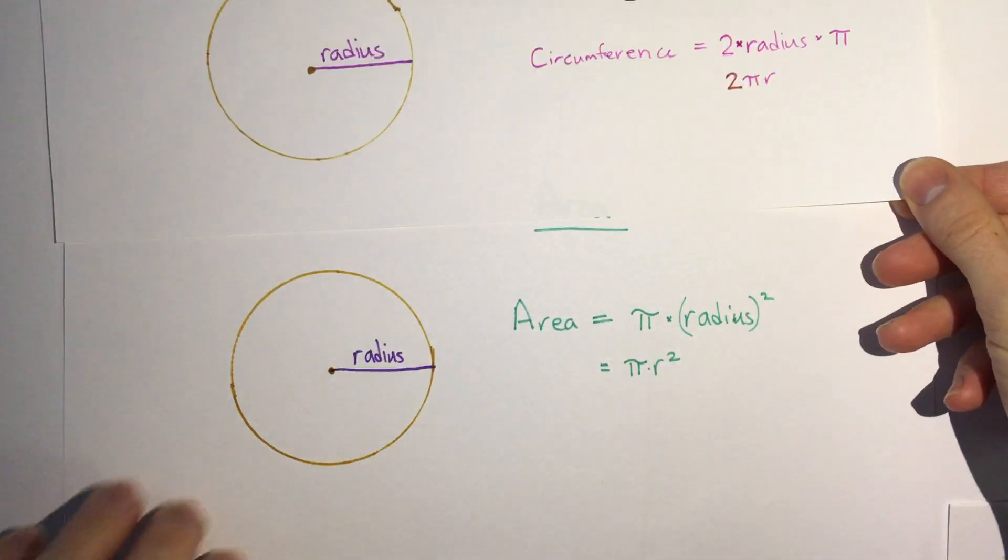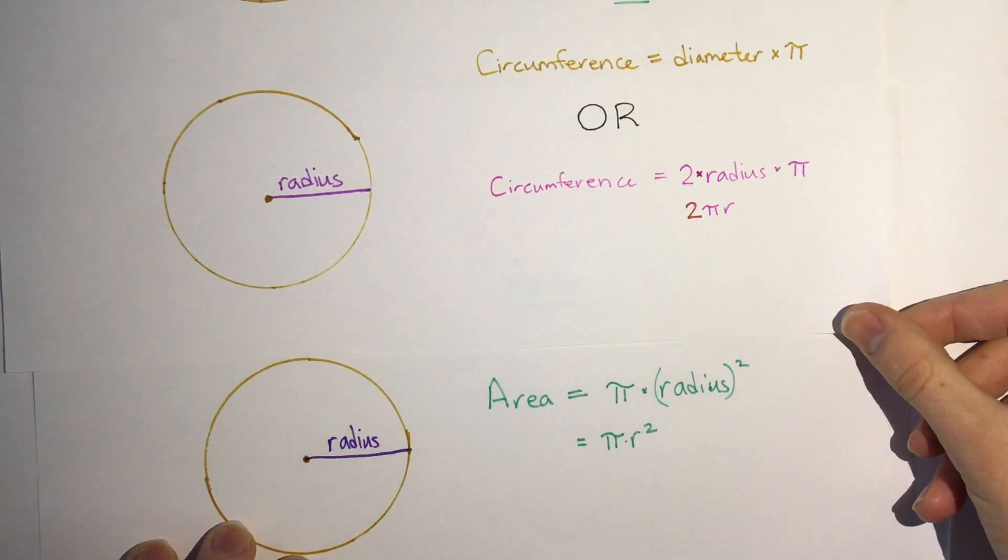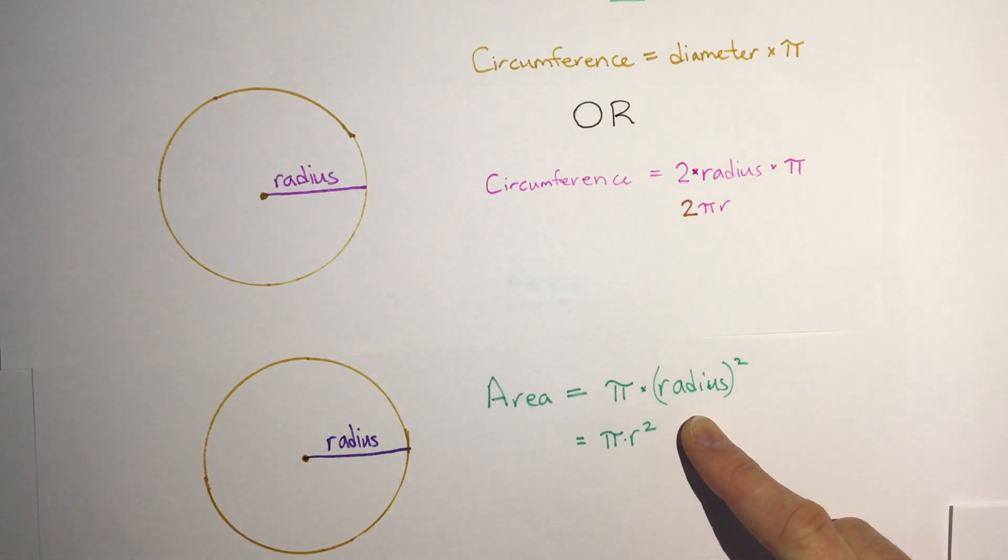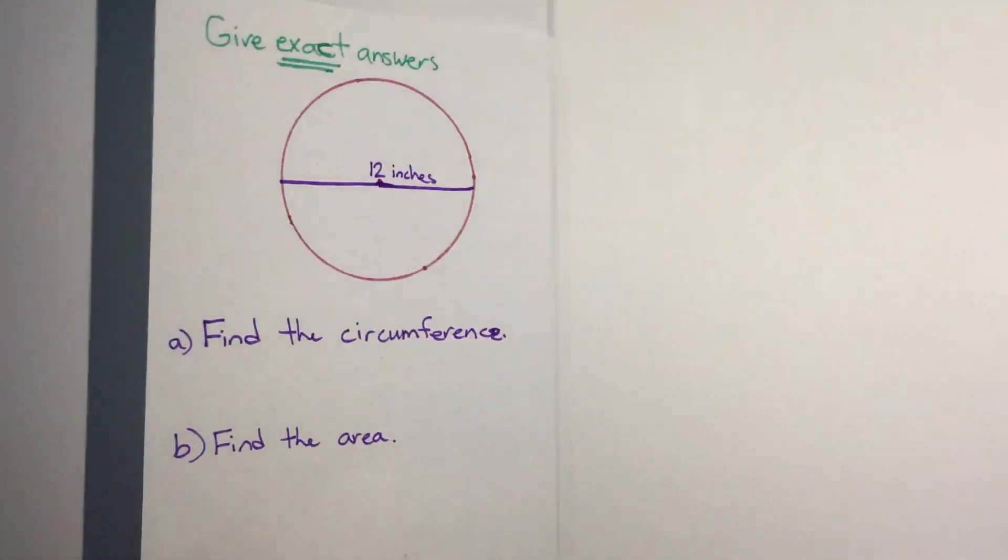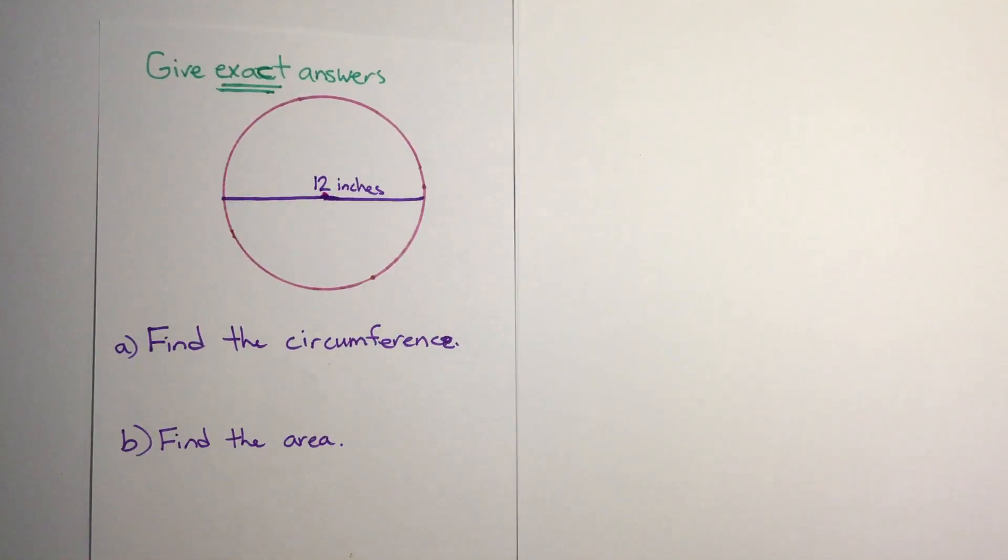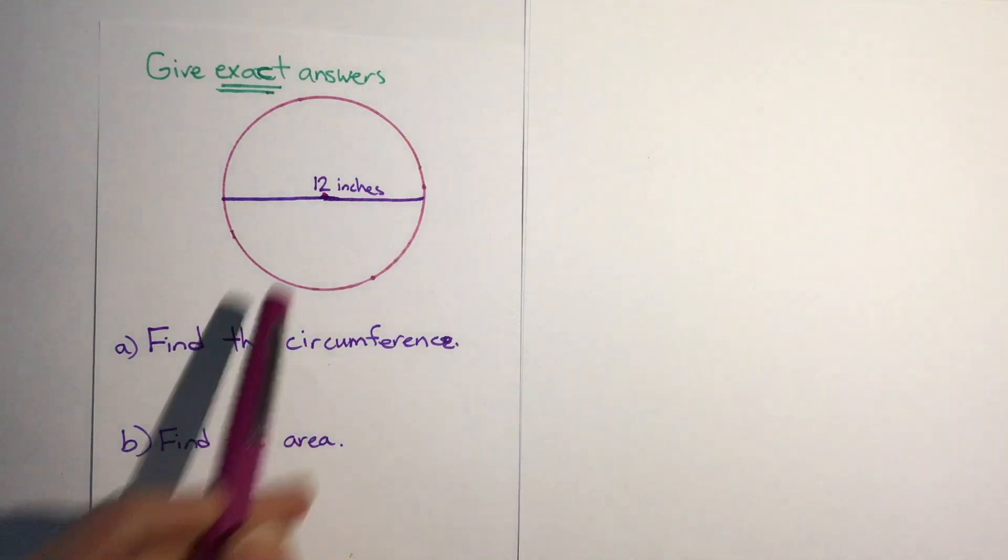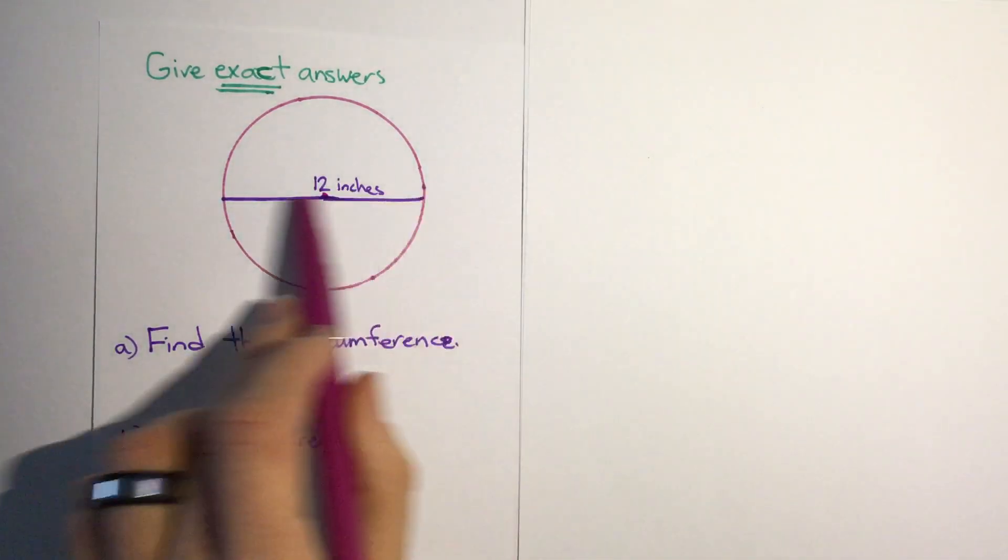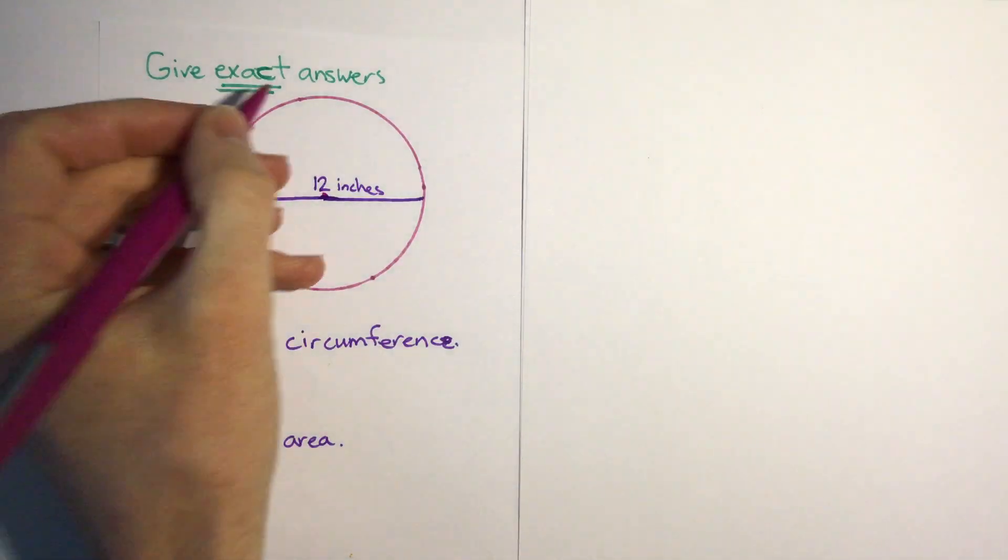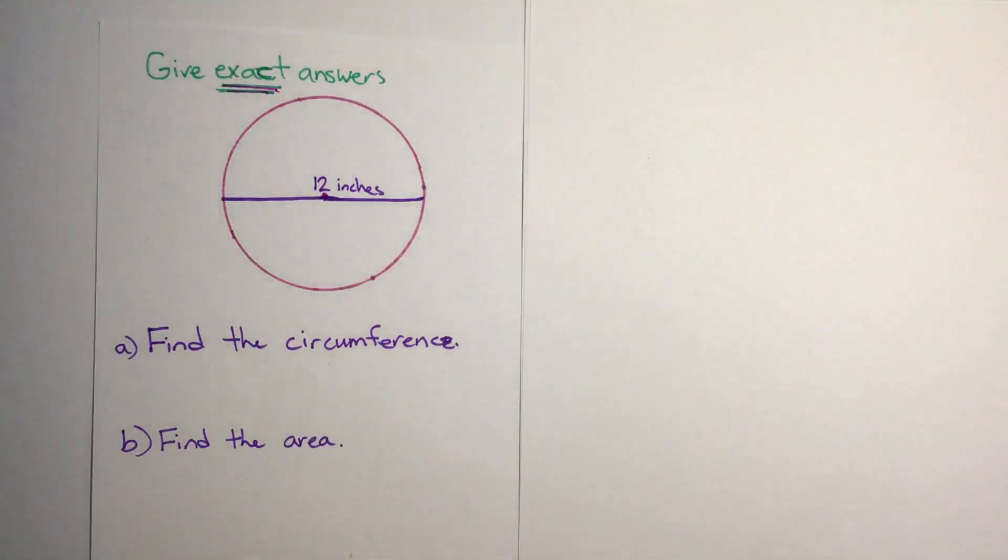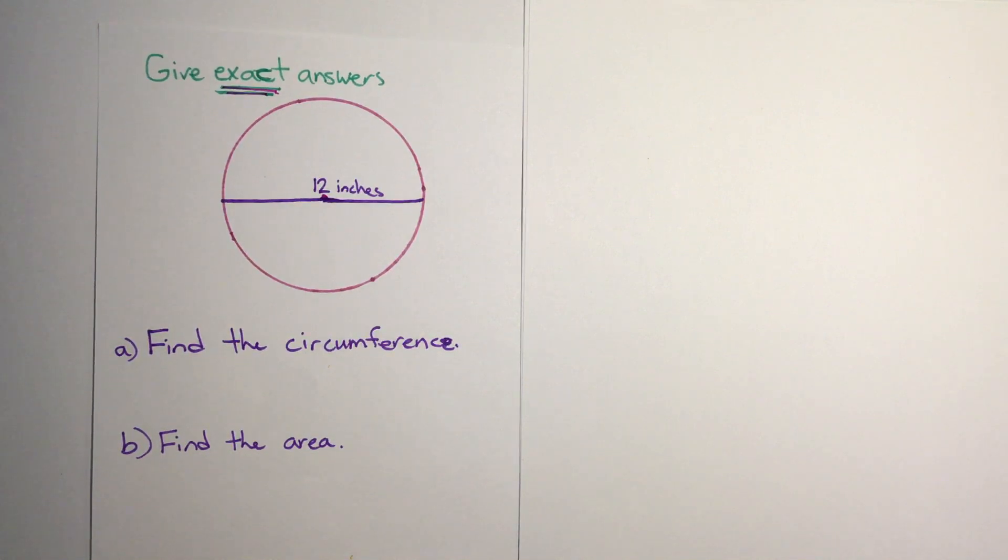So let's take a look at how to use this formula for circumference and the formula for area when we have an actual problem. The first question we'll look at here is a circle - we see it's given us the length 12 inches all the way across, so that's its diameter. And they ask us to find the circumference and find the area. Notice something here - it says give the exact answer. When it says give exact answer, what that means is we're going to find the answer without plugging it in our calculator for pi, but writing pi in the answer.